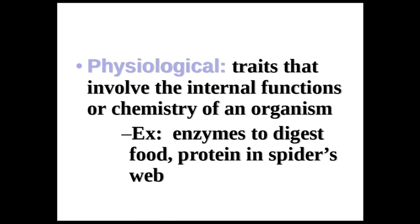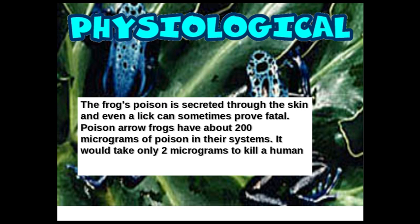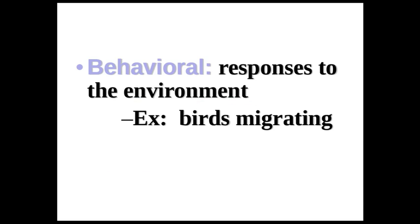Physiological sounds like physical, but it's a little bit different. These are traits that involve some kind of chemistry inside of your body. For humans, that's like the enzymes in the saliva that digest our food. For a snake, the venom that they make; the protein in a spider's webs — those are all chemistry made inside the body. So physiological is something that happens inside the body. Like the poison of a poison dart tree frog that secretes through their skin — that is one of the most fatal poisons on the planet. That's physiological.